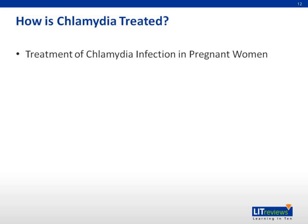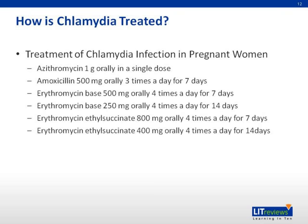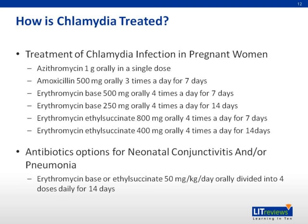There are several treatment regimens available for chlamydia infection in pregnant women: Azithromycin 1 g orally in a single dose; Amoxicillin 500 mg orally three times a day for seven days; or Erythromycin as another alternative. For newborn babies with neonatal conjunctivitis and/or pneumonia, the antibiotic option is erythromycin base or ethylsuccinate, 50 mg per kg per day orally divided into four doses daily for 14 days.